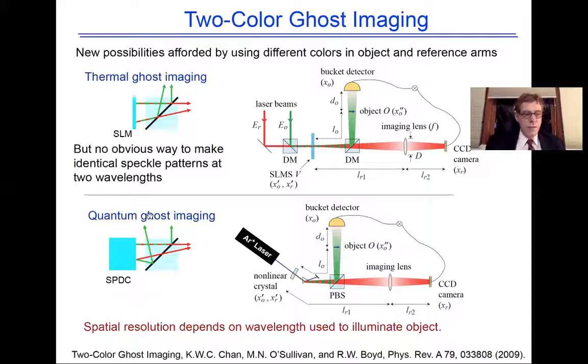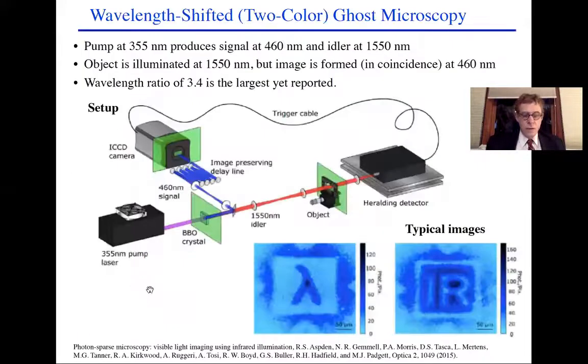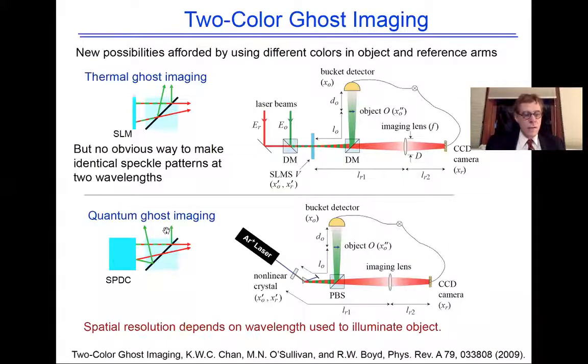New possibilities are afforded by using different colors in the object and reference arms. Let's say we take our parametric down conversion and arrange our nonlinear crystal so that the down conversion is non-degenerate. Let's say you produce a green photon and a red photon. And then, here's your bucket detector, here's your object. Let's say that you interrogate the object with the green photon, but you send the red photon to your CCD camera. So this allows you to capture an image of what this object looks like at a wavelength that is different from the wavelength of the light that your CCD camera can respond to.